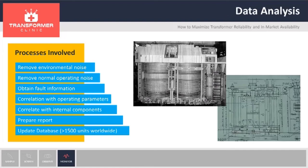Once we collect the data, we do some data analysis. The first step is to remove the noise. The noise can be environmental — wind, rain, snow — or operational, such as core noise, pump noise, or tap-changer operations. Once we remove the noise, we have the fault information. We correlate that with operating parameters, and if we have photographs or drawings, we can see what component is located in that part of the transformer and try to understand what is happening and what the acoustic emission is coming from.